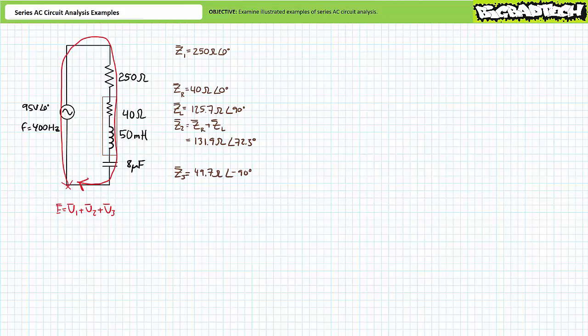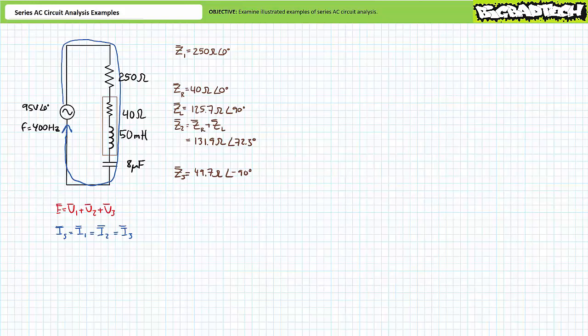A Kirchhoff's voltage law analysis of the single loop in this series circuit suggests that E equals V1 plus V2 plus V3. Additionally, given there is a single path for current in this series relationship, it can be stated that source current IS equals I1, which equals I2, which equals I3. If we solve for current through any element in this series circuit, we by extension also solve for current through all other elements as well as the source current. Perhaps the easiest and most direct means of obtaining desired figures is again through the use of the AC voltage divider rule.